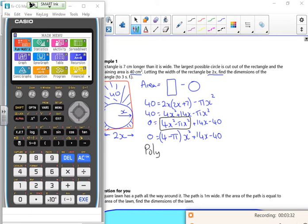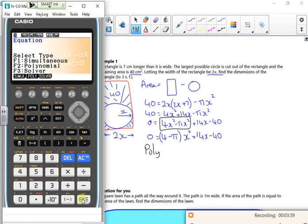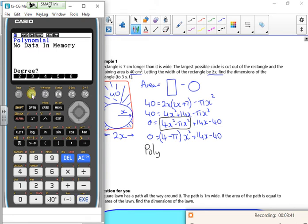So remember, it's menu, which I've done, go to equation, polynomial, which is f2 poly. It's a quadratic, so the maximum degree is 2, so that's f1.